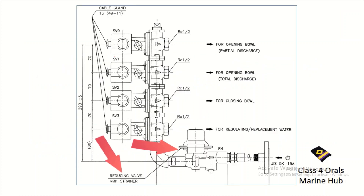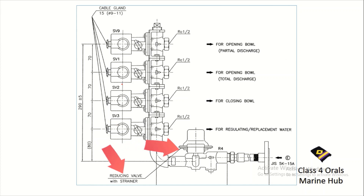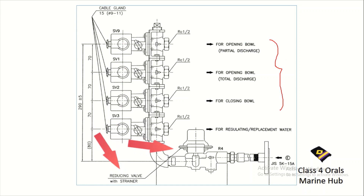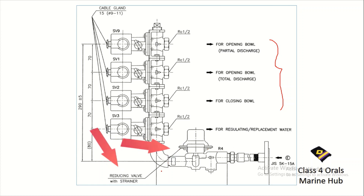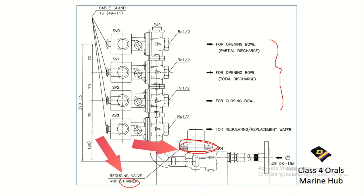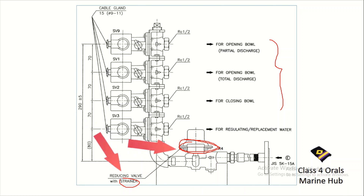This is a diagram taken from the Mitsubishi purifier. These are the solenoid valves: SV1, SV2, SV3, and SV9, each for individual purposes. This is the regulating and reducing valve with strainer. The strainer can become clogged, meaning water is not flowing at proper pressure. So there are chances that the purifier will be leaking.